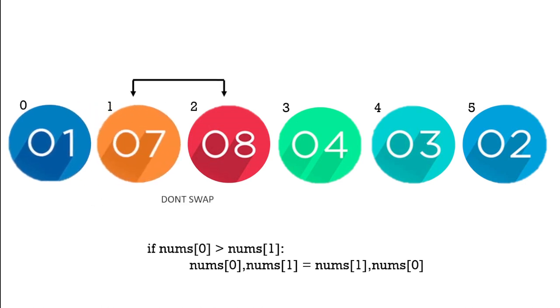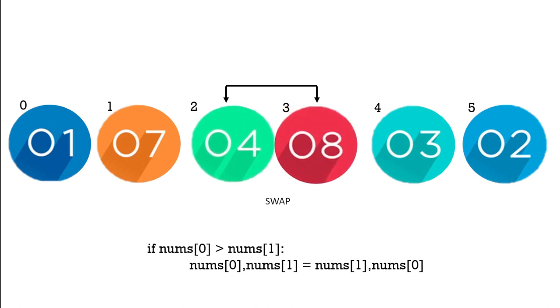Now let's move to the next two elements. They're in order, so we don't need to swap them. Now let's compare eight and four. Well we need to swap them. So let's change the order. So now we have four and eight.